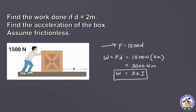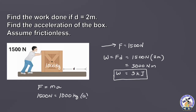For the acceleration, let us use Newton's second law. The force is equivalent to the mass times acceleration. So this is 1,500 newtons equals mass of the object. The mass is not given, so let us assume this mass is equivalent to 1,000 kilograms. It should be in the SI unit of mass, so this is already in the SI unit, 1,000 kilograms.